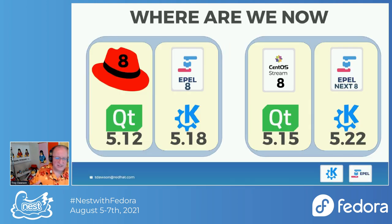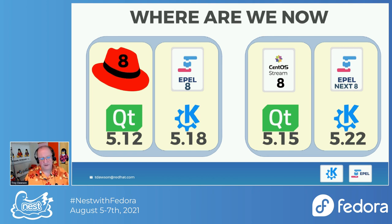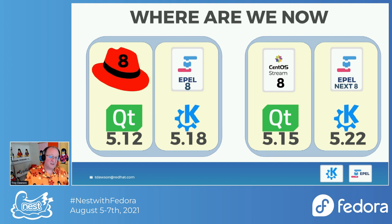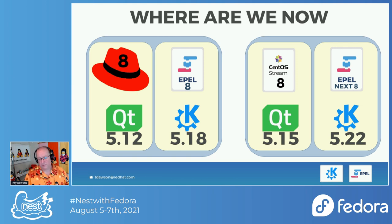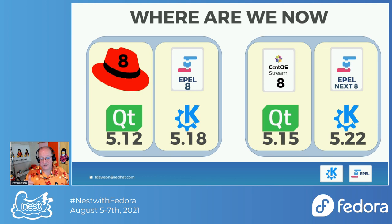So where does that bring us now? Currently, RHEL 8.4 has QT 5.12. The Plasma that is in RHEL 8 is 5.18 — the whole Plasma desktop, which has KF5 and all the others, those are different versions, but we'll focus on Plasma at 5.18. Now, CentOS Stream 8, which is going to become RHEL 8.5, has updated to QT 5.15, just in time for us to do this update, which is exciting.